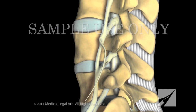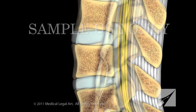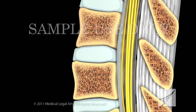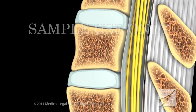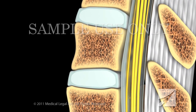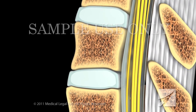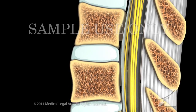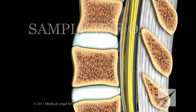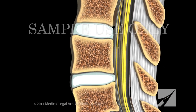The spine consists of bony vertebrae stacked one on the other, shock-absorbing intervertebral discs lying between the vertebrae, and ligaments and muscles connecting the bones.